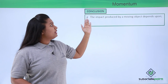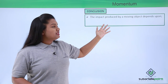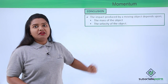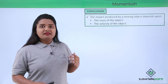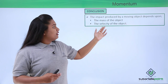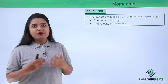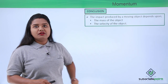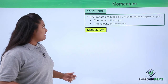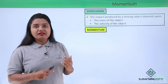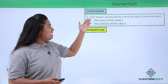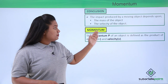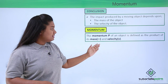The conclusions we draw from all these examples: the impact produced by a moving object depends upon two factors — the mass of the object and the velocity of the object. The more massive an object is, the more impact it produces, and the greater the velocity of a body, the more impact it produces. The physical quantity which relates mass and velocity of a moving body is named as momentum.